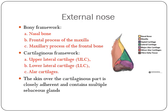The nose is formed of two parts: the external nose and the nasal cavity. The external nose consists of a bony framework and a cartilaginous framework. The bony framework consists of the nasal bone, the frontal process of the maxilla, and the maxillary process of the frontal bone. The cartilaginous framework is formed of the upper lateral cartilage, lower lateral cartilage, and alar cartilage. The skin over the cartilaginous part is closely adhered and contains multiple sebaceous glands.